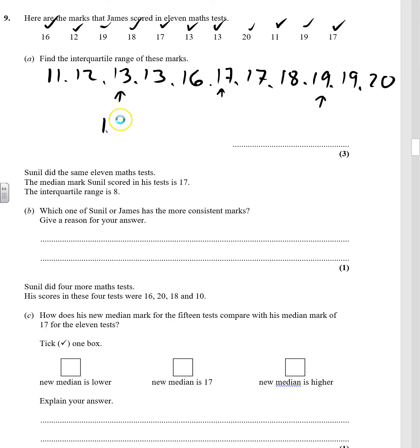Then, interquartile range is 19 minus 13. Largest take away the smallest. So we've got interquartile range of 6.